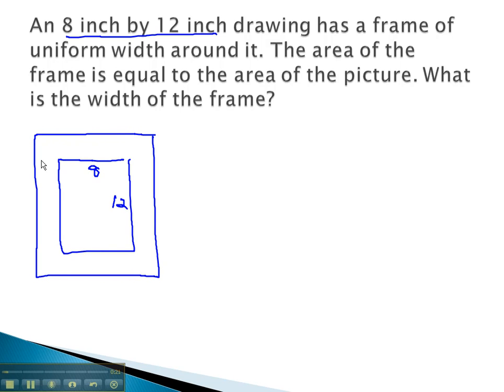We remember that the frame is on the left and right sides, and so we have an x, or an unknown distance, on both sides. Now, the new width is 8 plus 2x. Similarly, we have frame on top and bottom, giving us 12 plus 2x.